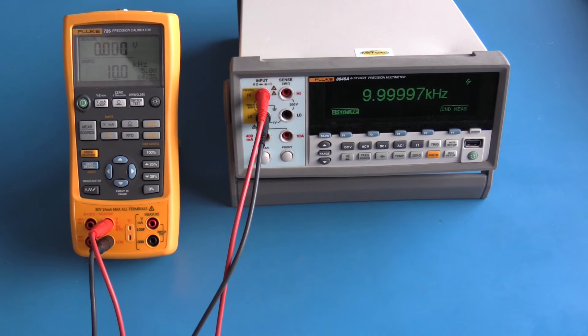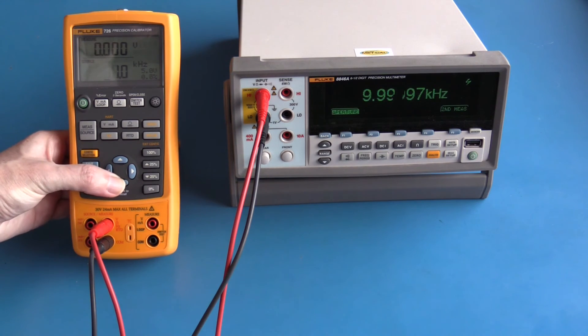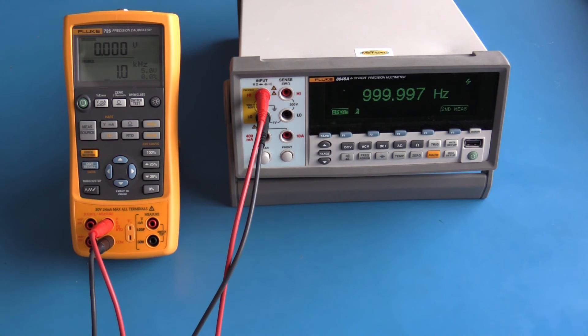I've now set up the Fluke 8846a to measure frequency. The Fluke 726 is generating a 10 kilohertz square wave. Again, the Fluke 726 allows us to set any arbitrary value we want within its range. It's one kilohertz, for example.